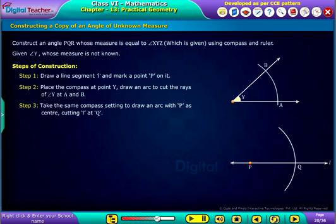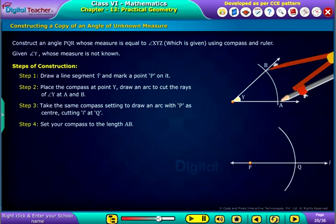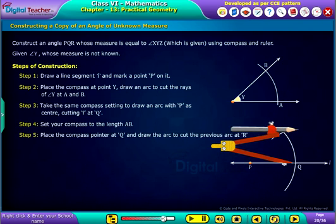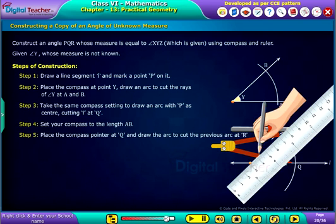cutting L at Q. Set your compass to the length AB. Place the compass pointer at Q and draw the arc to cut the previous arc at R. Join P R.